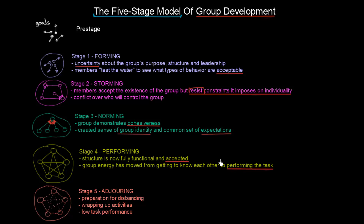However, every group will go through a fifth stage — adjourning. This is simply a preparation for disbanding. The connections between members are getting weaker and weaker and will eventually diminish. The group is wrapping up activities, has low task performance, and after this stage the group will stop to exist. These are the five stages through which groups go when they are developing.